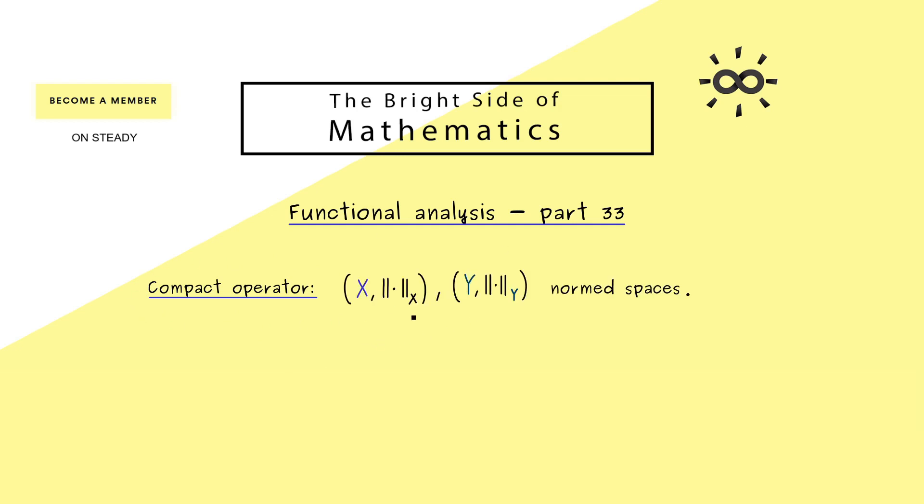So what we need now are two general normed spaces we call X and Y. And then we consider a linear operator T from X to Y. More precisely as always it should be a bounded linear operator.